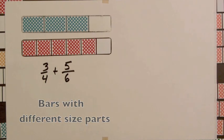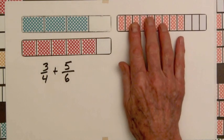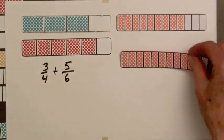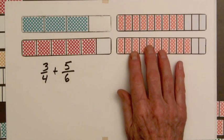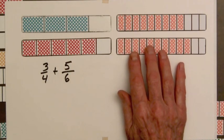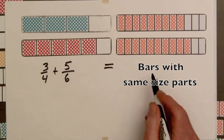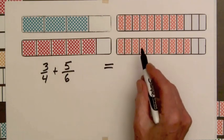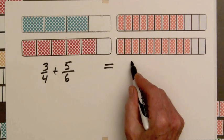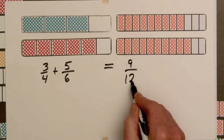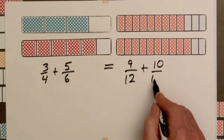So we'll go for this bar here, ten out of twelve is equal to five out of six. So now we've replaced these two bars by these bars, and we have the fractions 9/12 plus 10/12.